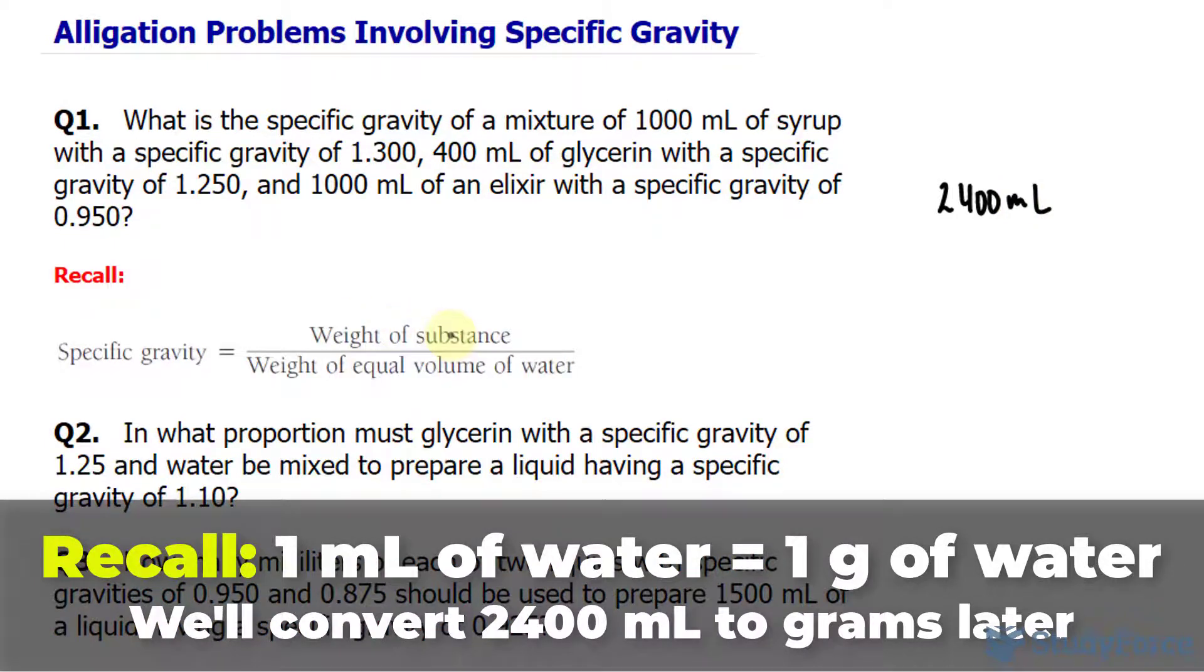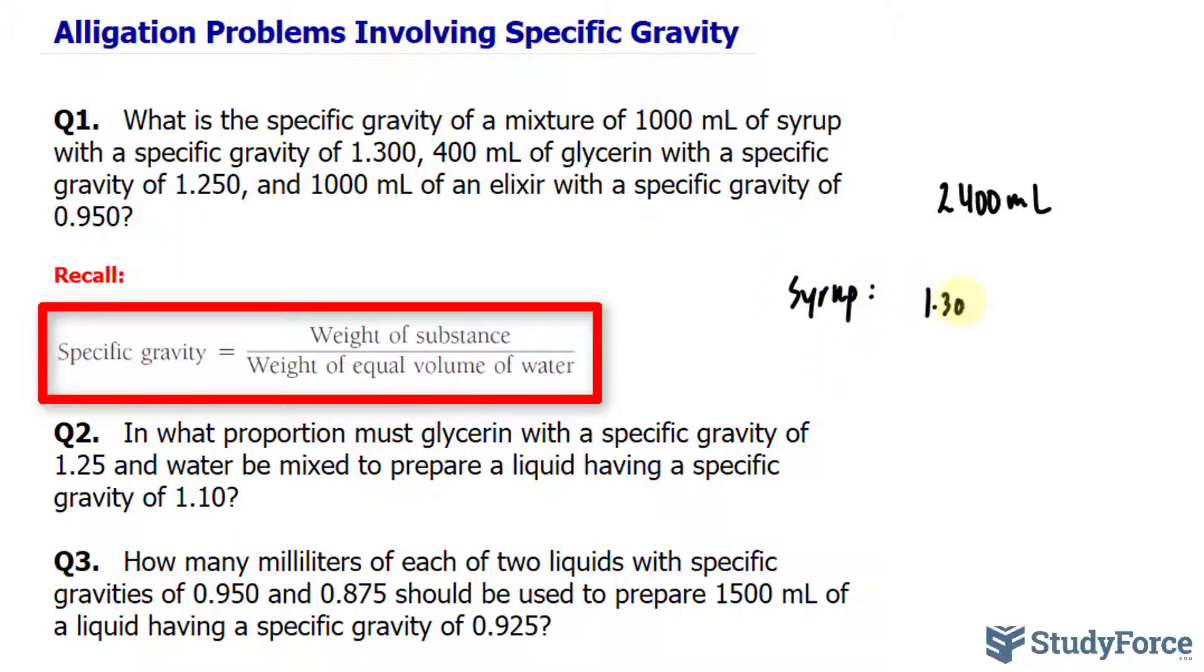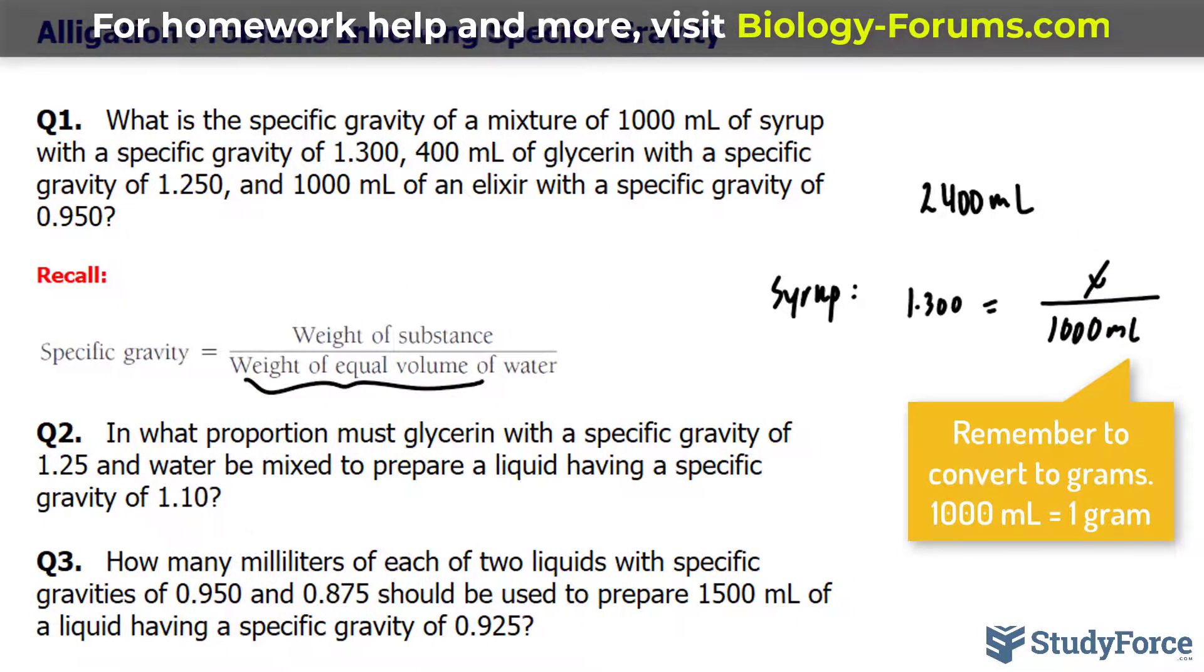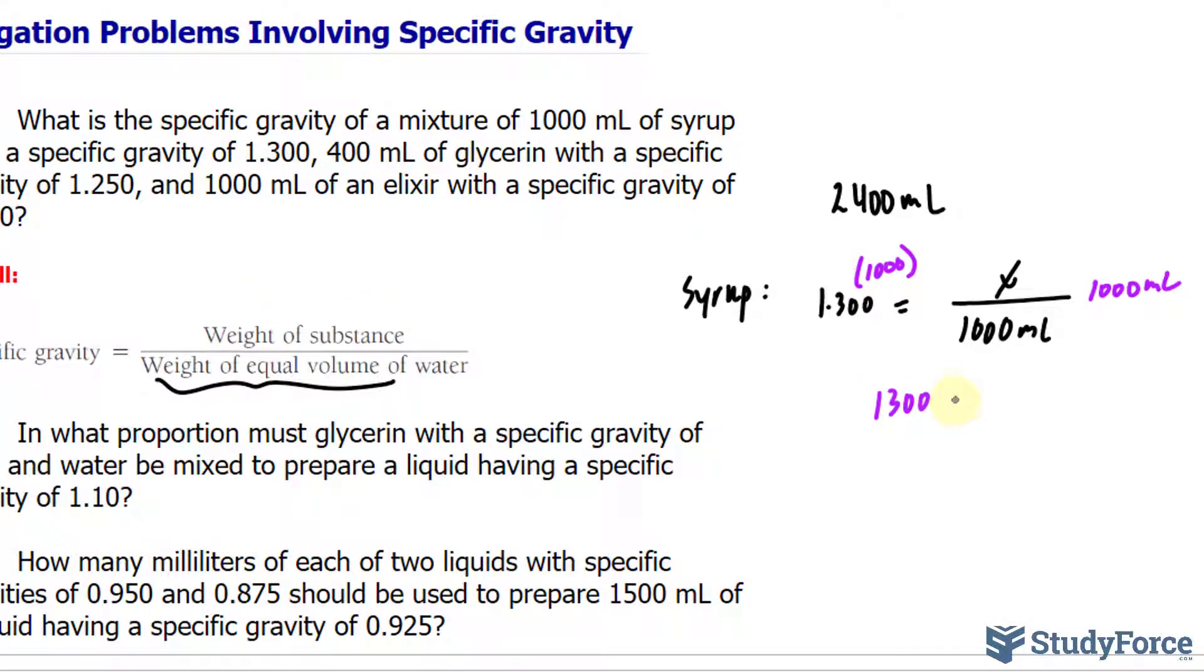Next, what we want to do is find the weight of the substance, which is the combination of all three. For syrup, for instance, by knowing that its specific gravity is 1.300 and that it's 1000 milliliters, I can place that value underneath here, 1000 milliliters, and I can solve now for its weight. So I'll leave that as x. Multiplying both sides of this equation by 1000, just think of cross multiplication here, we end up getting 1300, and the weight we can say it's in grams.